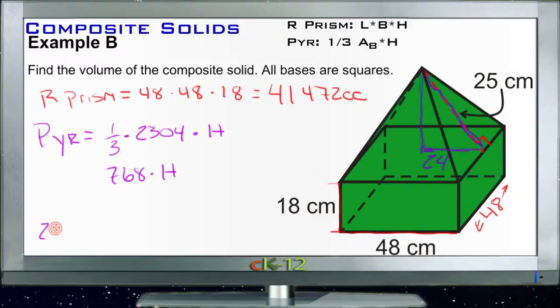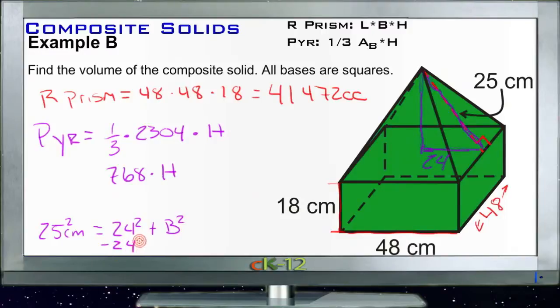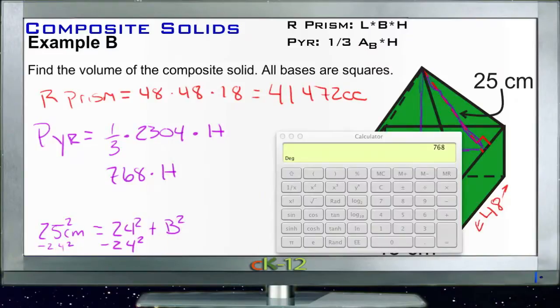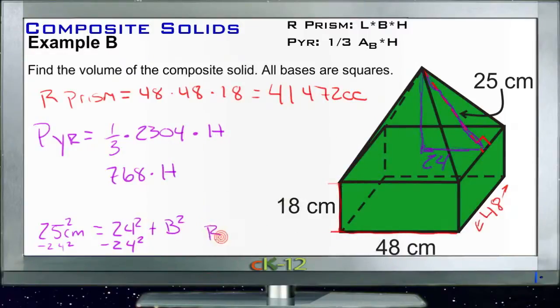So we got 25 centimeters squared is equal to 24 squared plus b squared. So we'll use our calculator again. We're going to subtract 24 squared from both sides. So we're just going to pull up 25 squared minus 24 squared. So we got 25 squared minus 24 squared equals 49. So b squared is going to be 49, which means, of course, that b is 7. So our height, then, is 7 units.